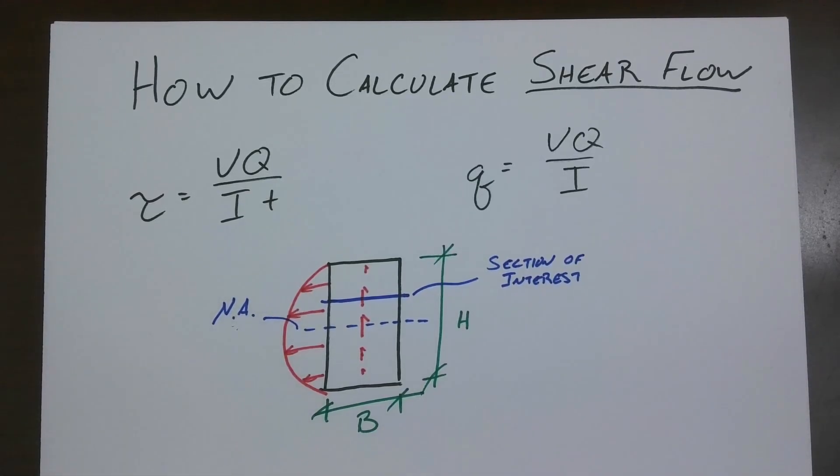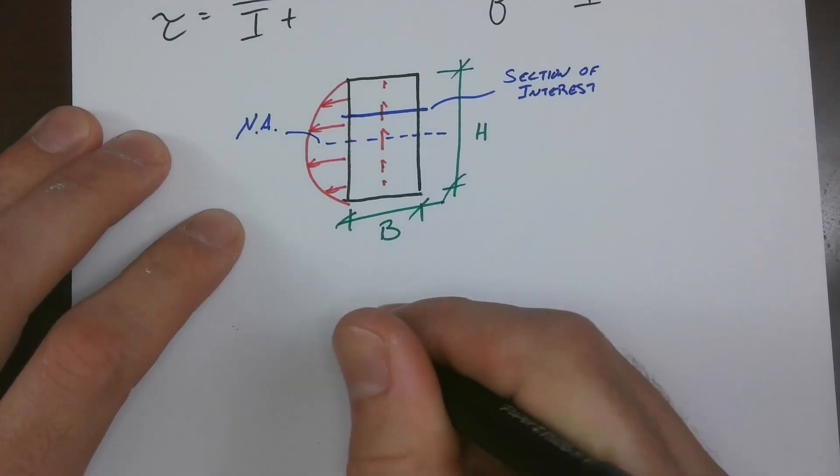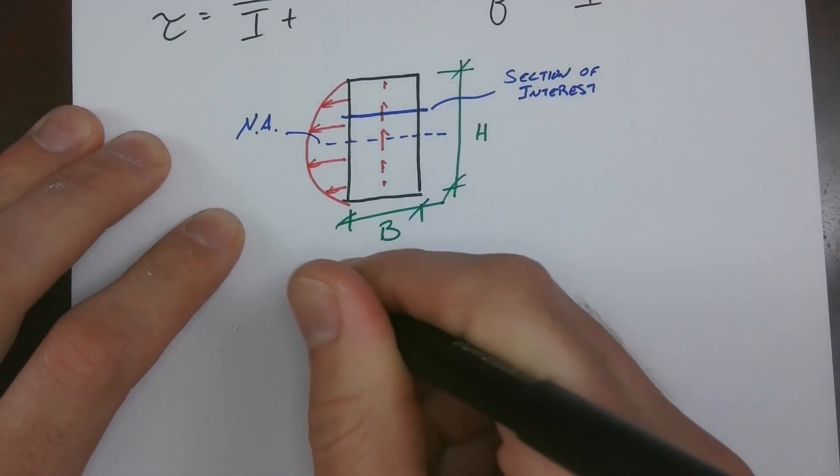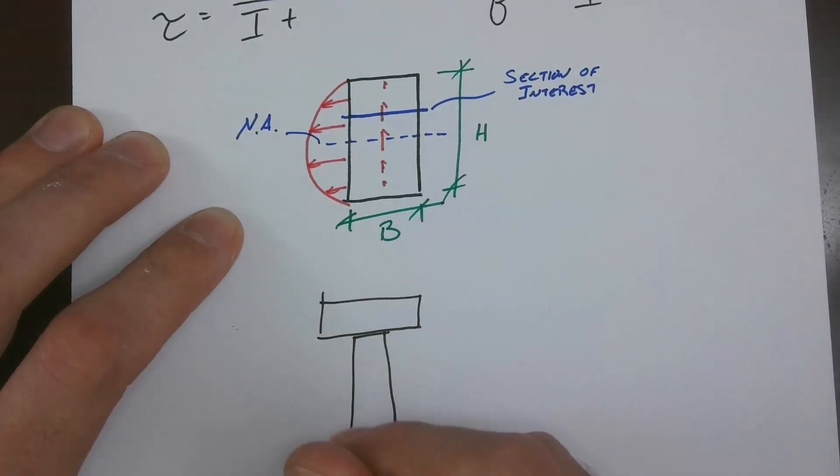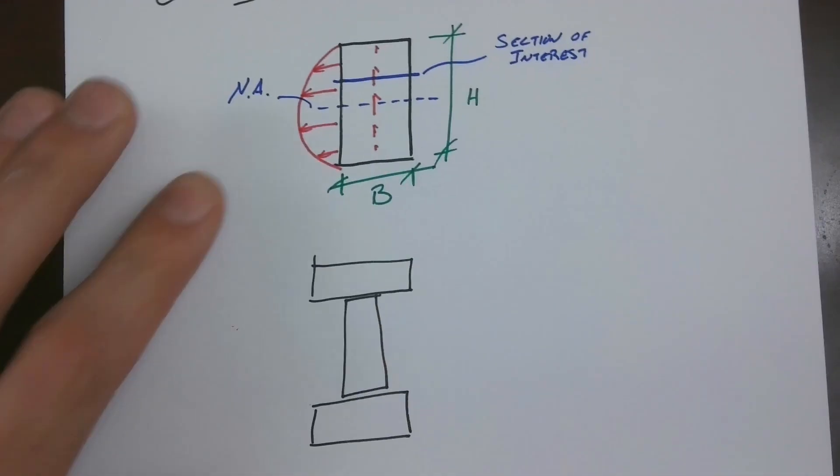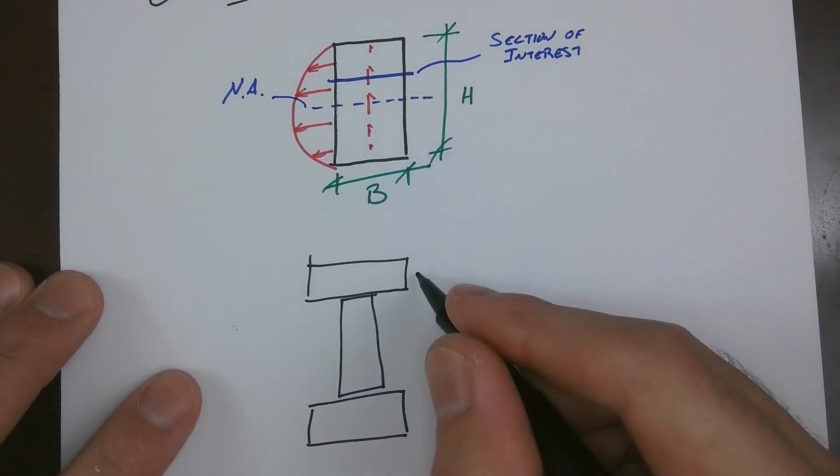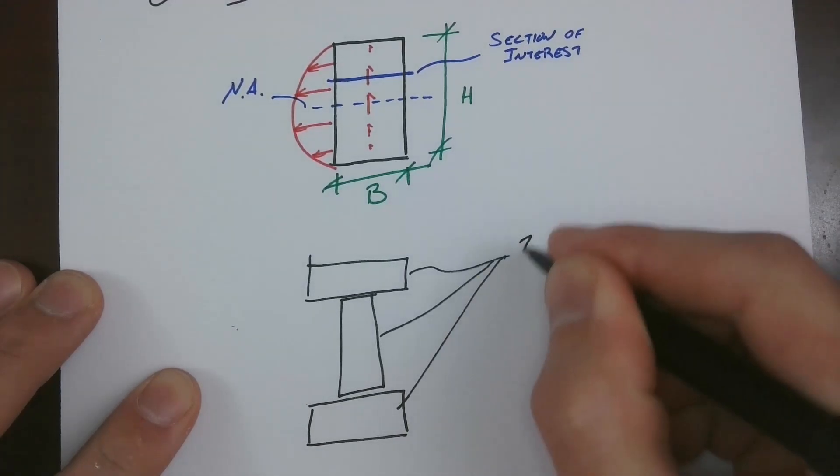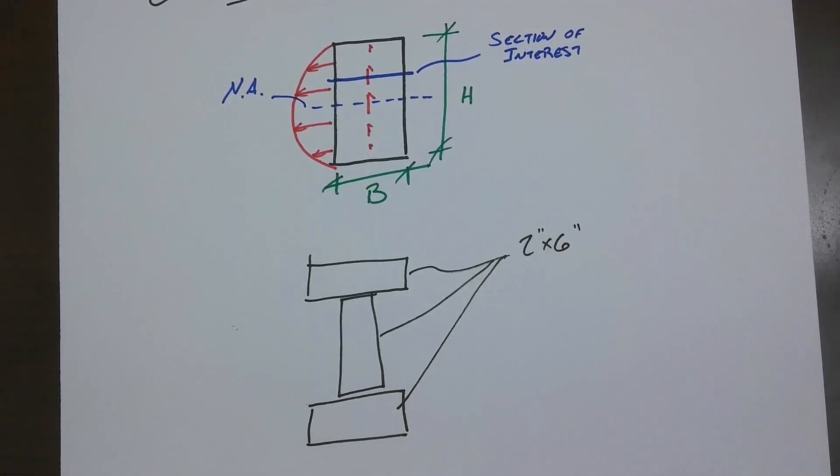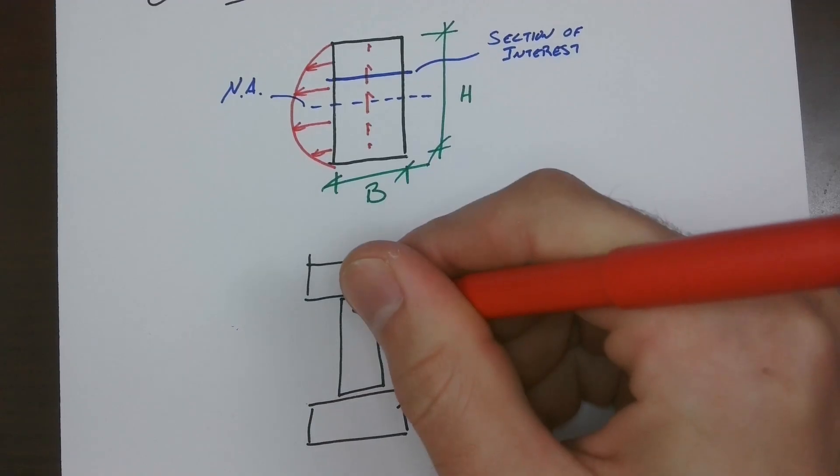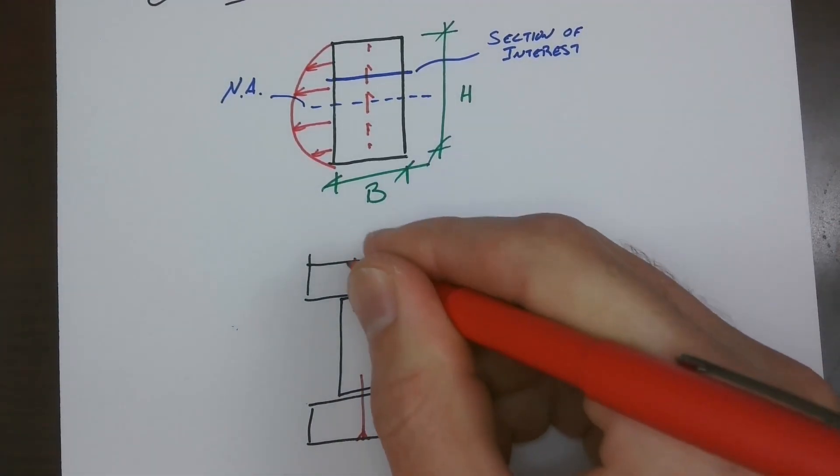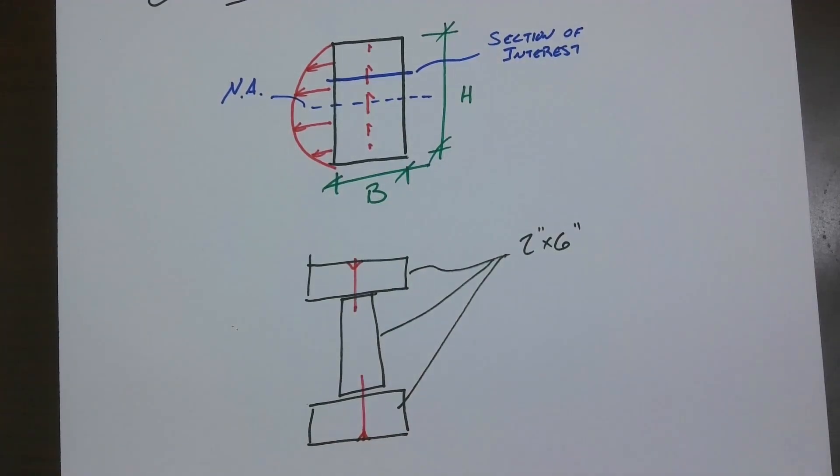If you are trying to build up a section, say you are taking some 2x6s, and we're just going to pretend that they are full 2x6 for this application here. So each one of these is a 2x6. And you're trying to make this all act together compositely. For whatever reason, you're building up this beam. You need to make sure that your nailing pattern coming down into these, connecting everything together, is sufficiently strong to transmit the shear to make this all act together as a composite section.